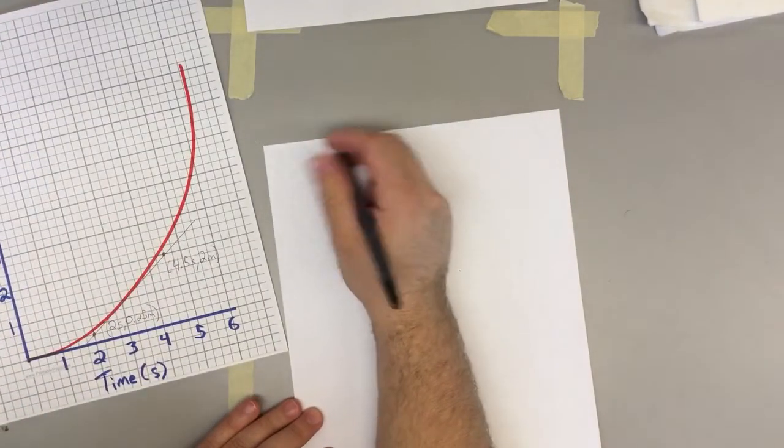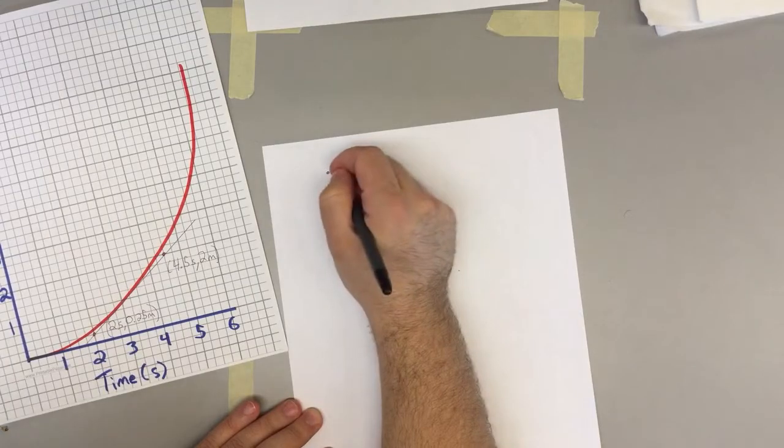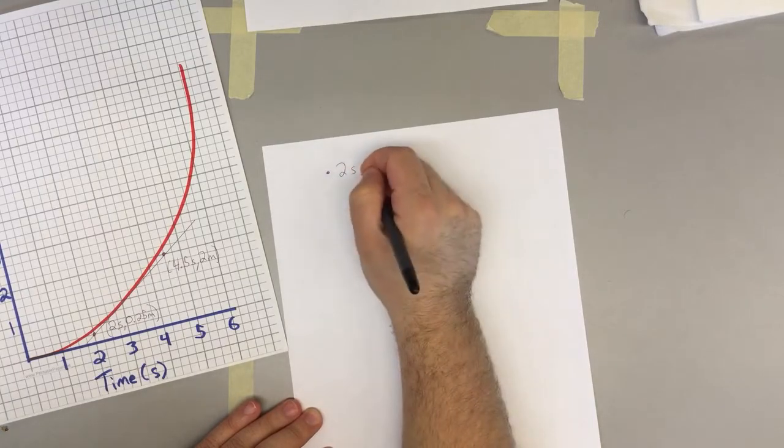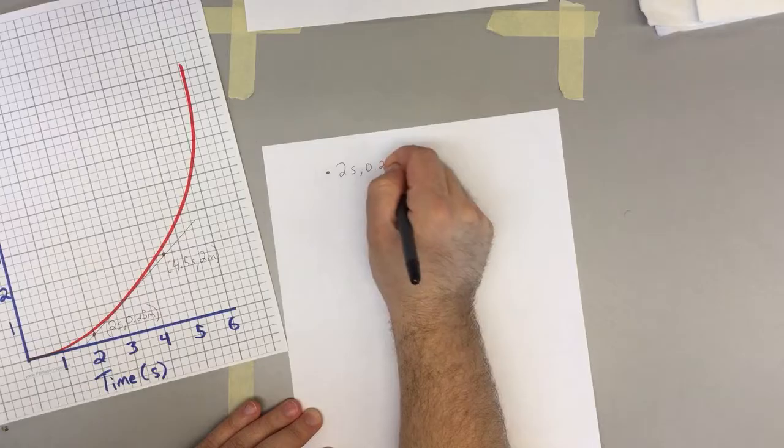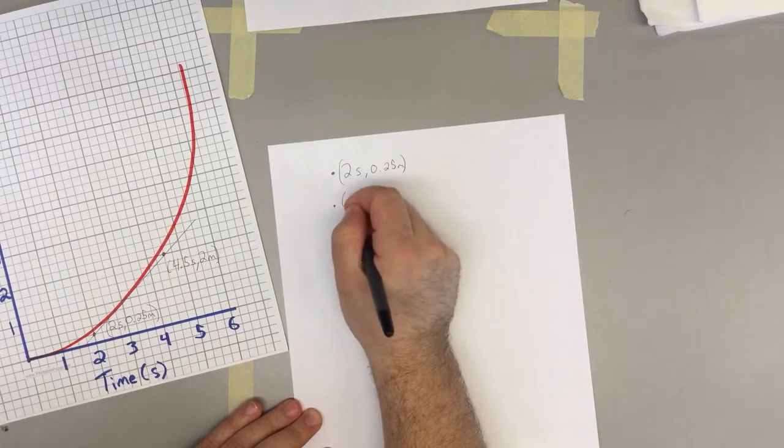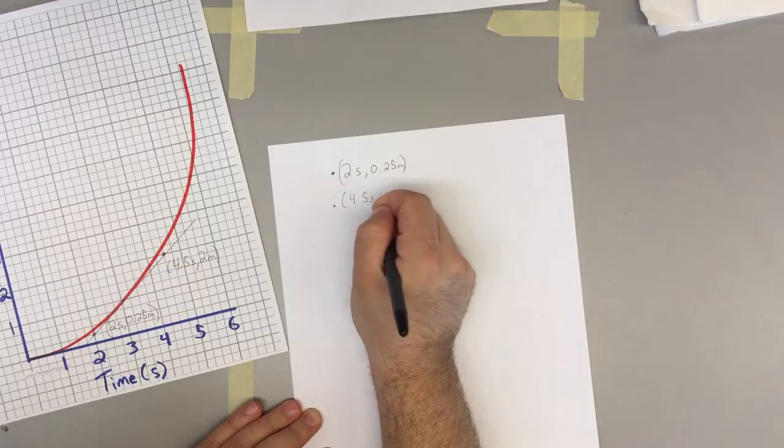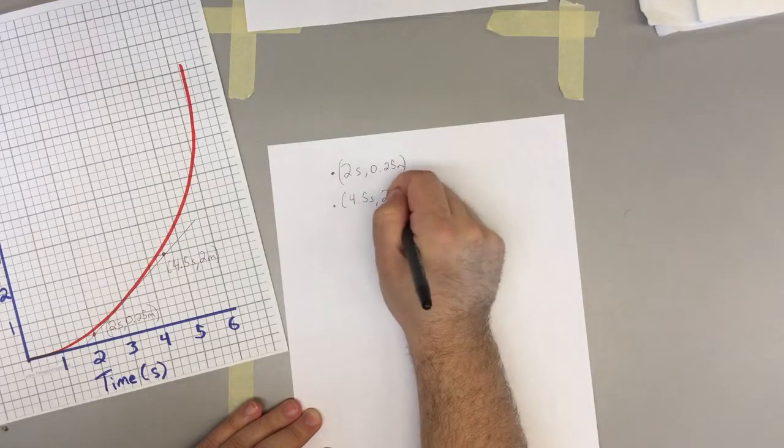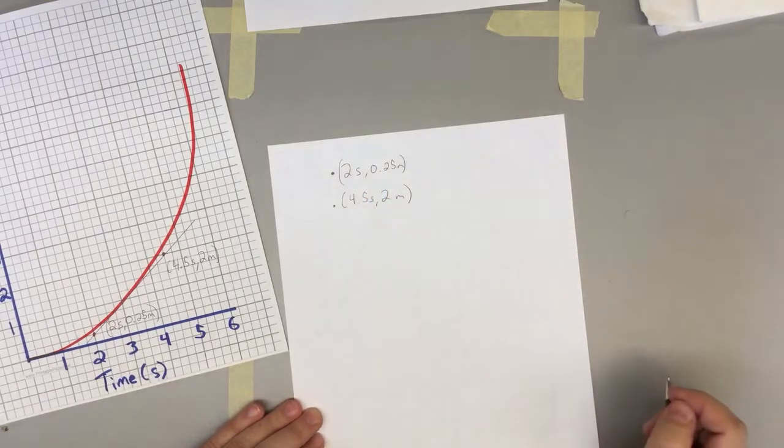So my first dot was at two seconds, 0.25 meters. Our second dot was at 4.5 seconds and it was at two meters. After that, we just have to do our basic slope calculation or our velocity equals distance over time calculation.